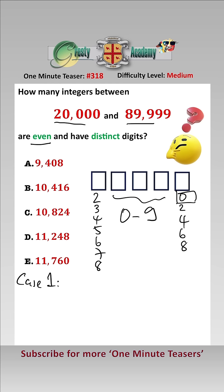Therefore there are 1, because we have 1 choice for the 0, times 7 choices here, times 8 choices here because we have already used two of the digits up. Here we have 7 choices and here we have 6 choices. That's case 1.